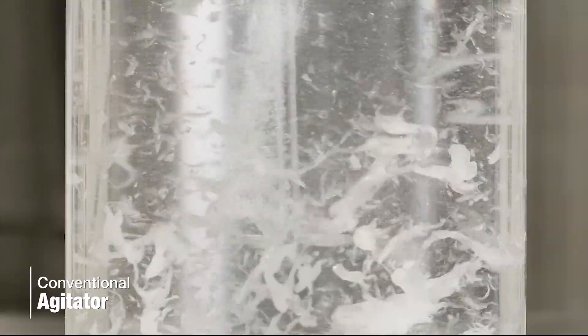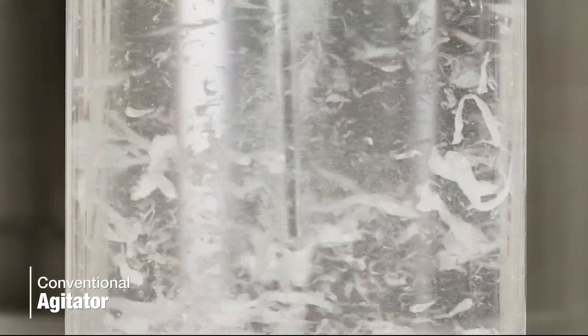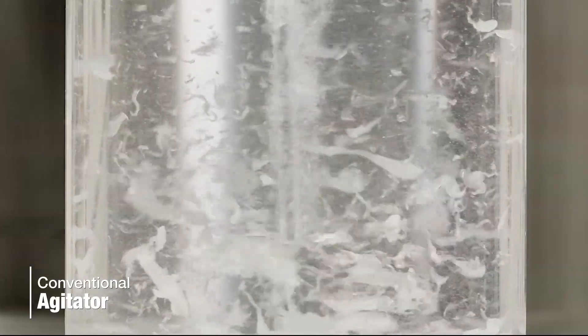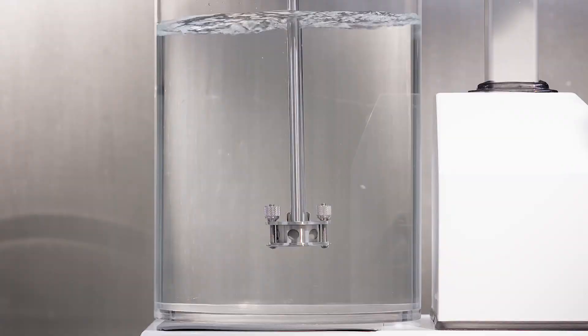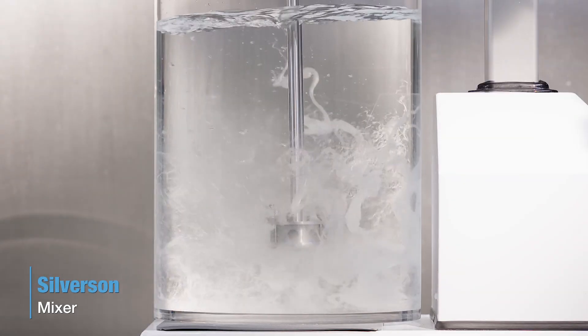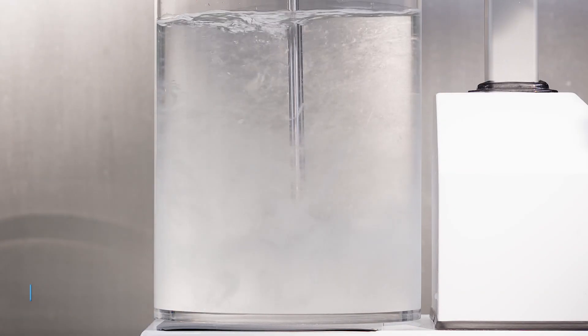Blending liquids of wildly differing viscosities can also be difficult with an agitator, as the more viscous liquid tends to form globules that don't readily blend with the surrounding liquid. This is known as stratification. The positive mixing provided by a Silverson mixer can blend the two liquids instantaneously.